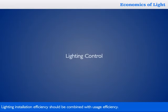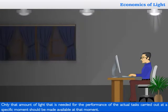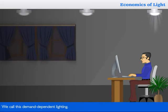Lighting installation efficiency should be combined with usage efficiency. Only that amount of light that is needed for the performance of the actual tasks carried out at a specific moment should be made available at that moment. We call this demand-dependent lighting.